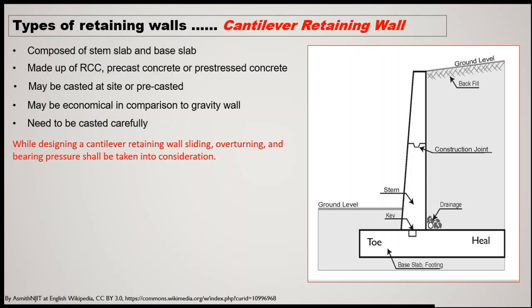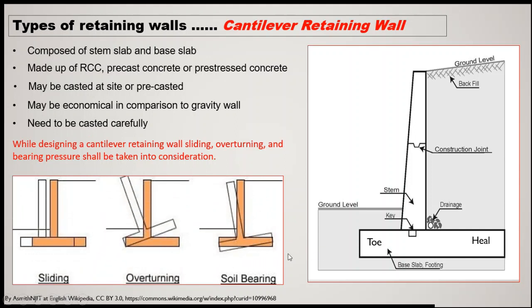While designing a cantilever retaining wall, sliding failure, overturning failure, and bearing failure — all these types of failures — have to be taken into consideration. Whatever pressure is acting on the wall, the design of the wall must be such that it is safe against sliding. As seen in the figure, the wall can slide away, overturn due to movements, or penetrate into the soil. When we design a retaining wall, all these failure modes must be considered so that our cantilever retaining wall is safe.